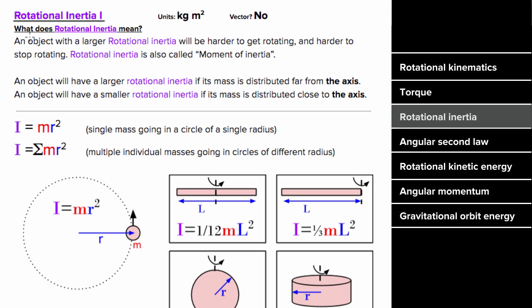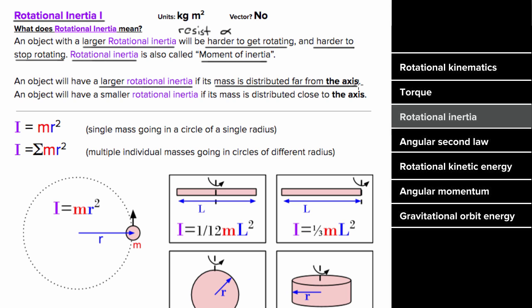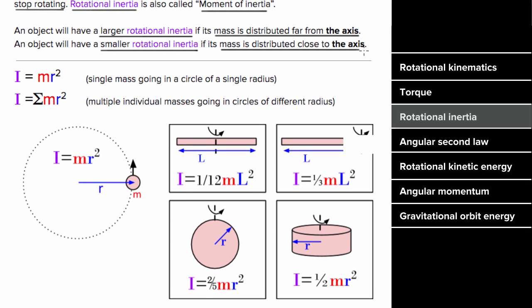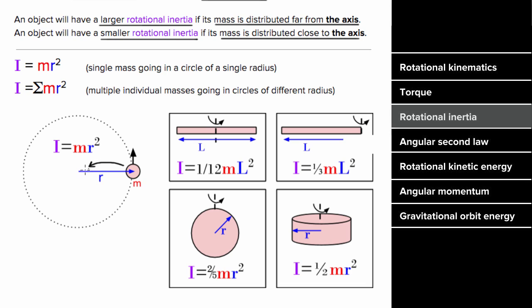What does rotational inertia mean? An object with large rotational inertia will be hard to get rotating and harder to stop rotating. Rotational inertia tells you how much an object will resist angular acceleration, just like regular inertia tells you how much an object will resist regular acceleration. This is often referred to as the moment of inertia. You can increase rotational inertia by placing mass far from the axis of rotation, and make it smaller by placing mass closer to the axis of rotation.